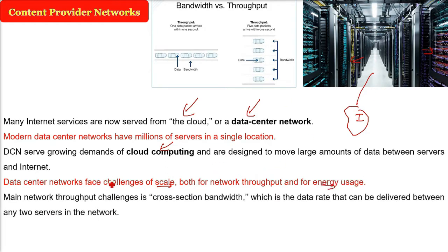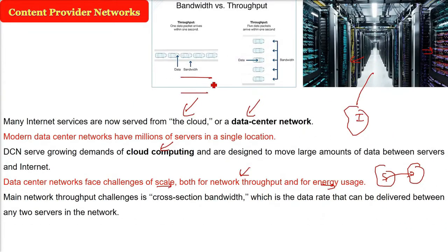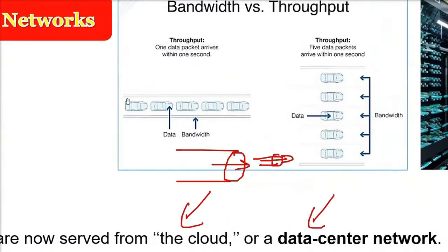Before going ahead, let me talk about network throughput, because the main network throughput challenge is cross-section bandwidth — the data rate that can be delivered between any two servers in this data center network. To understand bandwidth and throughput: if you have a pipe with water flowing, the mouth of the pipe represents the bandwidth. If you reduce the mouth, bandwidth is less. But if one data packet arrives per second versus five packets per second, the throughput of the second one is higher.